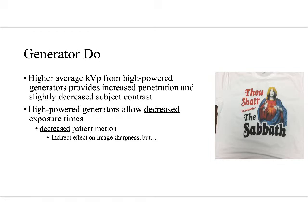Generator dues: what the generator does is, as we have a higher average KVP generated from high-powered generators, this is going to increase penetration and slightly decrease subject contrast. As I increase power generation, I'm affecting average KVP and, as a result, decreasing subject contrast. Because as KVP goes up, subject contrast goes down — they're inversely related.